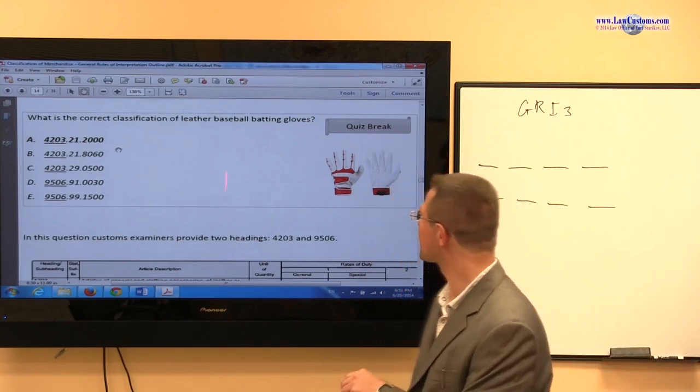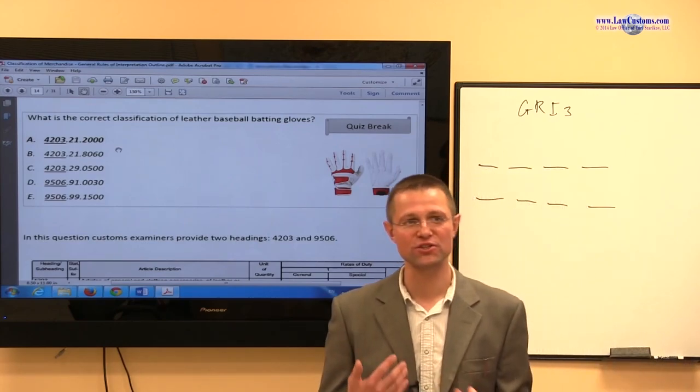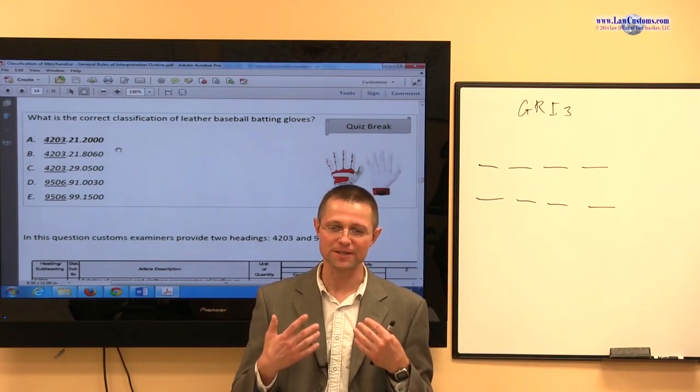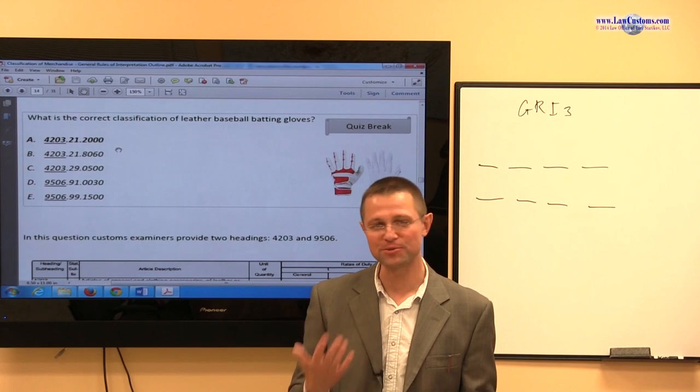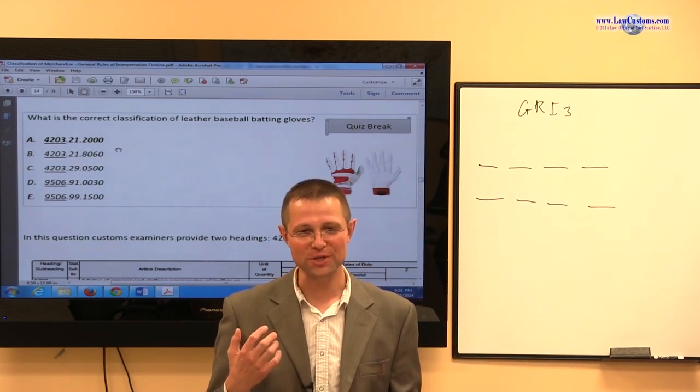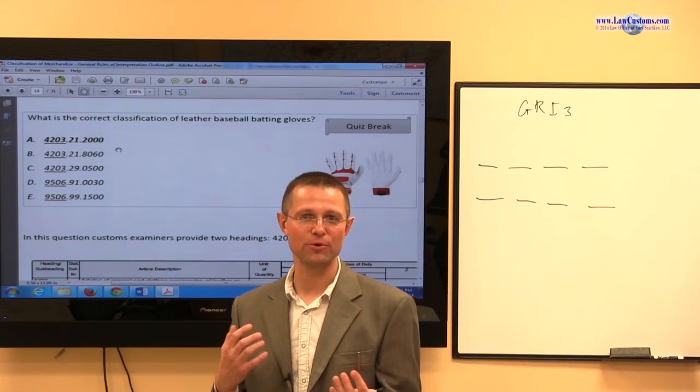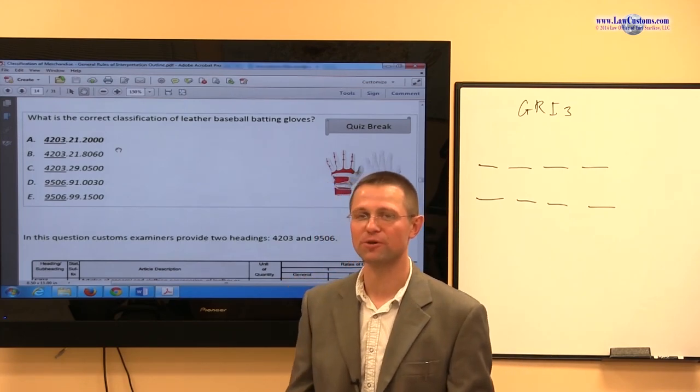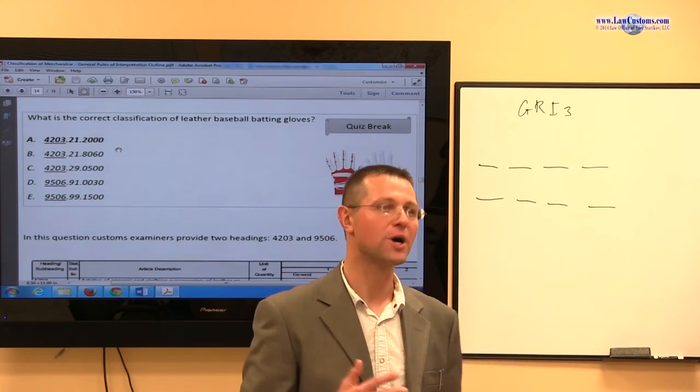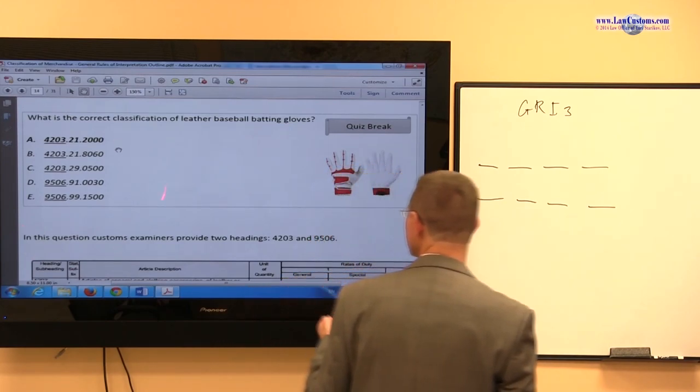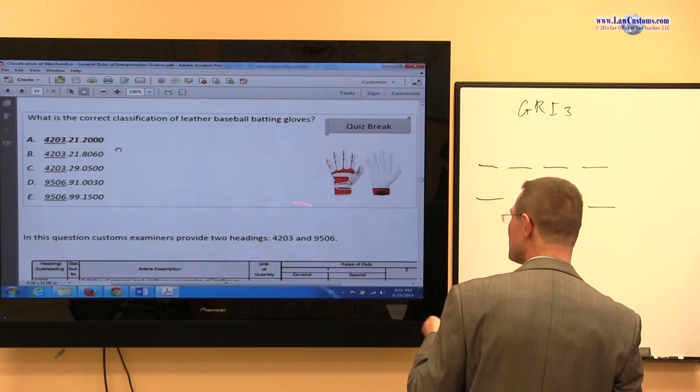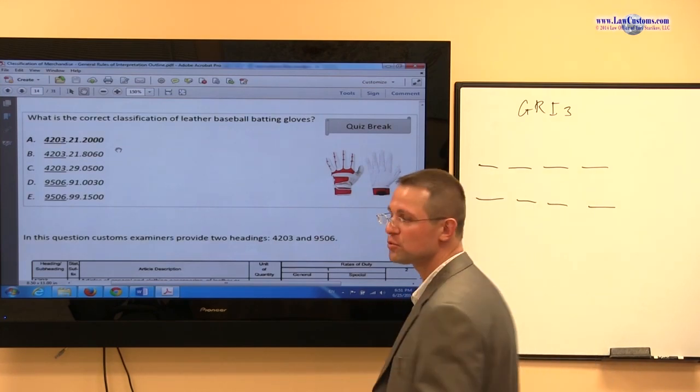So again, here we are presented with this tension that I mentioned earlier and you will always see throughout your classification journey - you have this use provision where you have sporting equipment versus the make provision where you have articles of leather. So how do you resolve that? Which question really predominates?